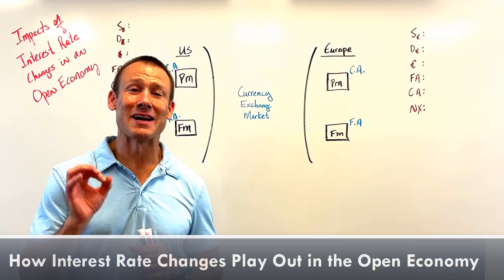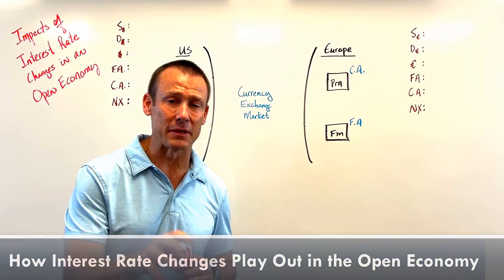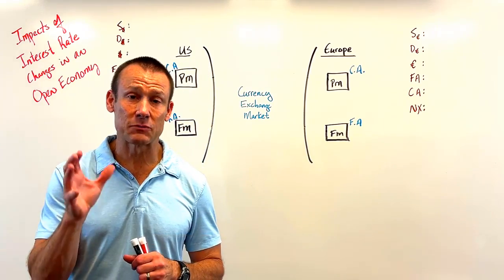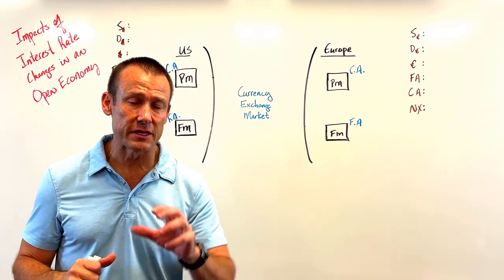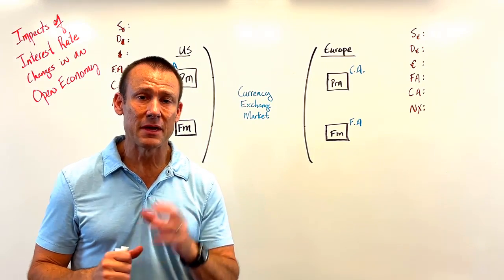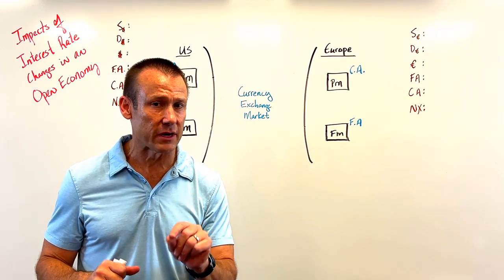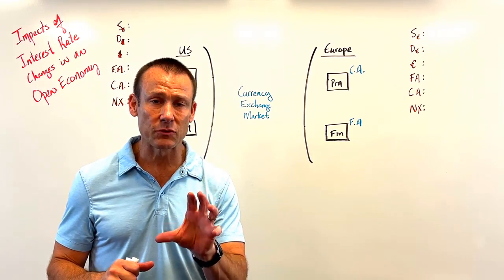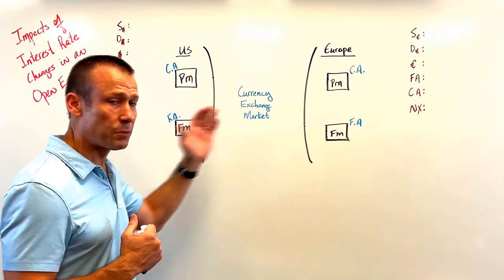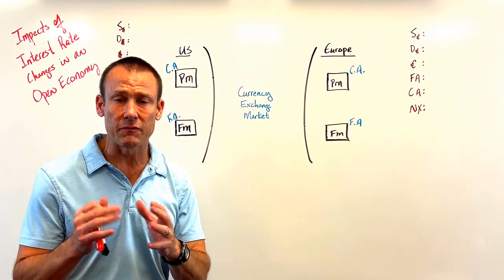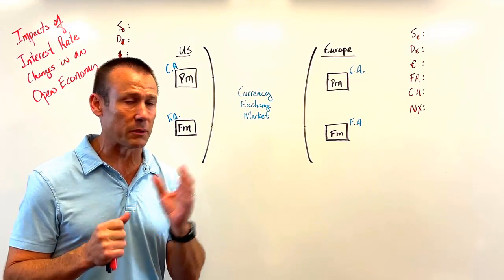Hey everybody, in this video we are focused on how interest rate changes play out in the open economy. It's when you get a problem that starts with an interest rate change as the cause — the initiator — and then asks for all those downstream impacts. That's what this video is all about, and this is the model we're going to use. It's a super simple model I love for answering these types of questions.